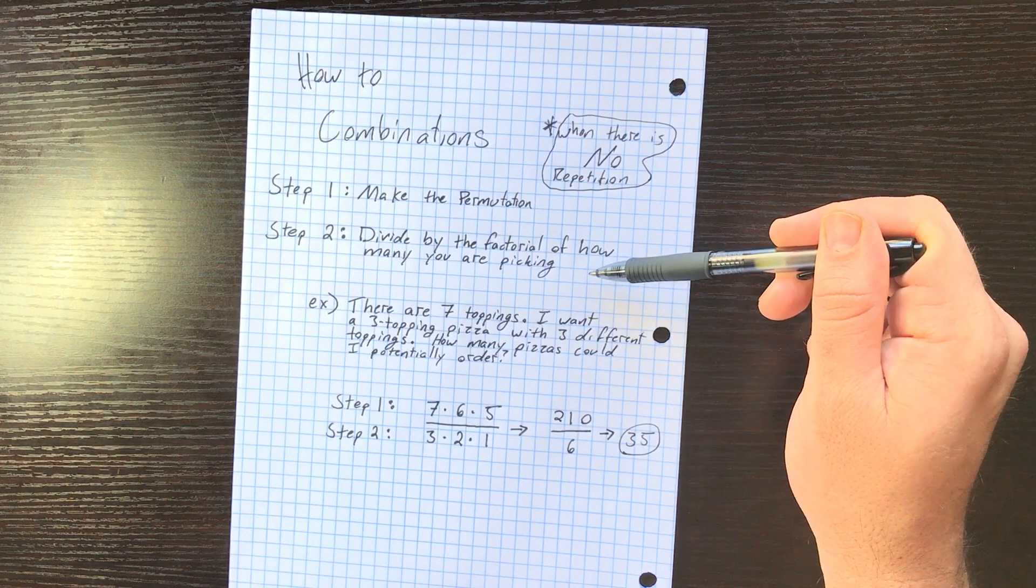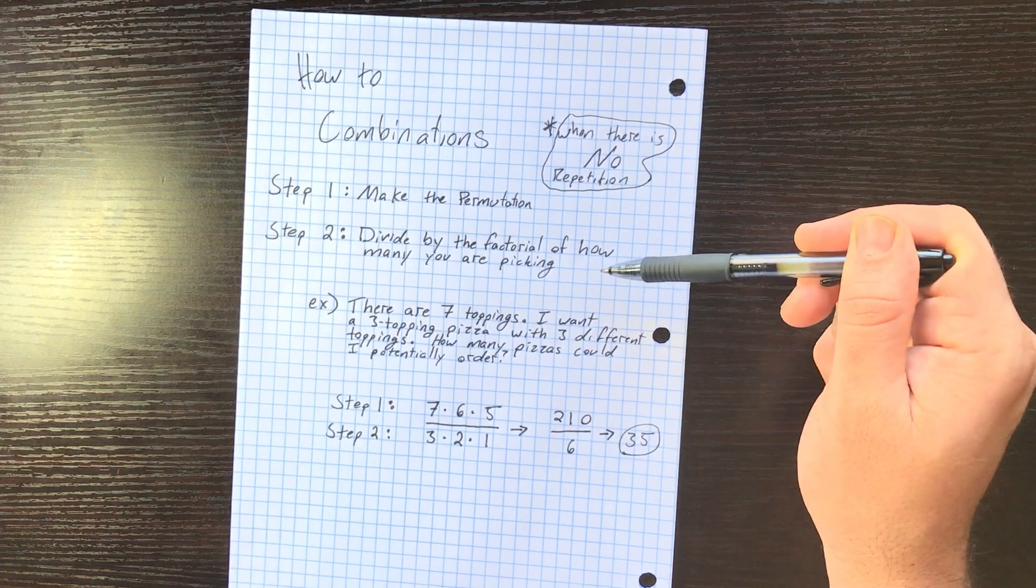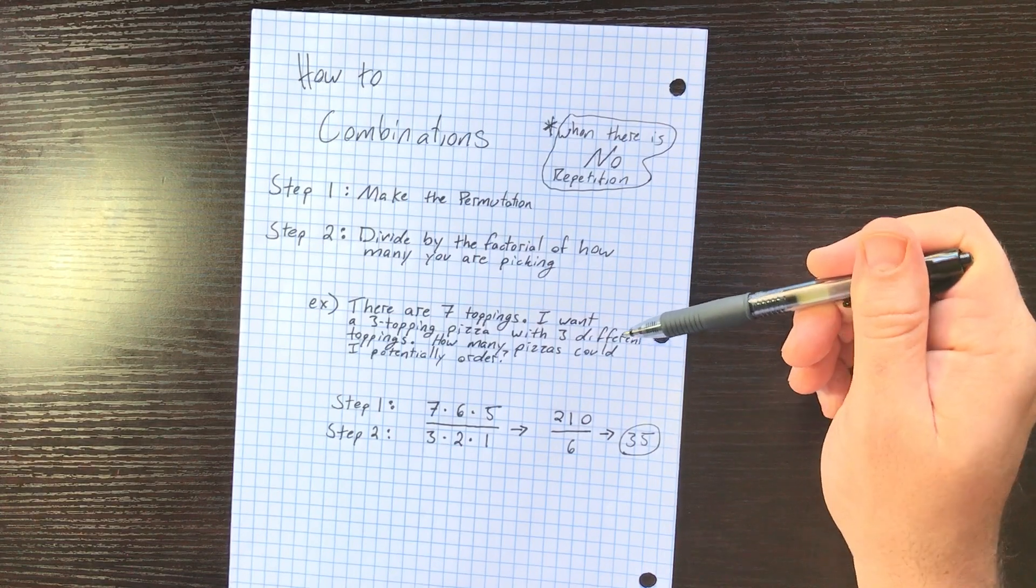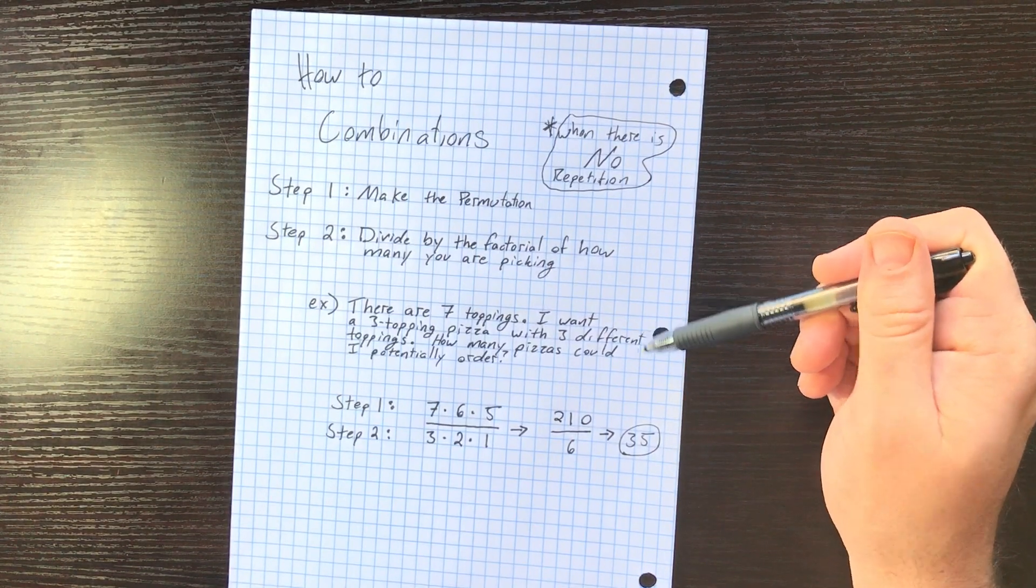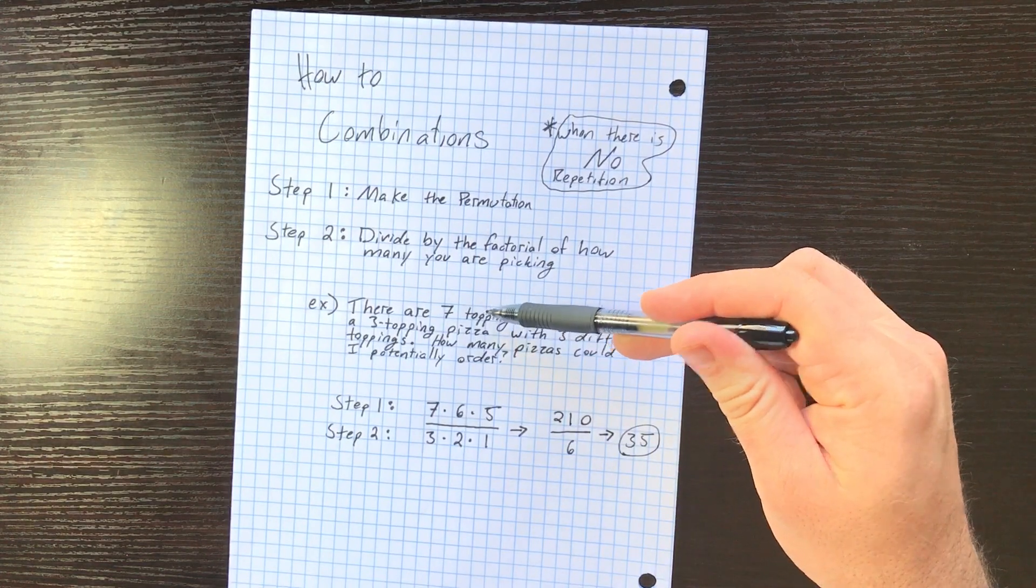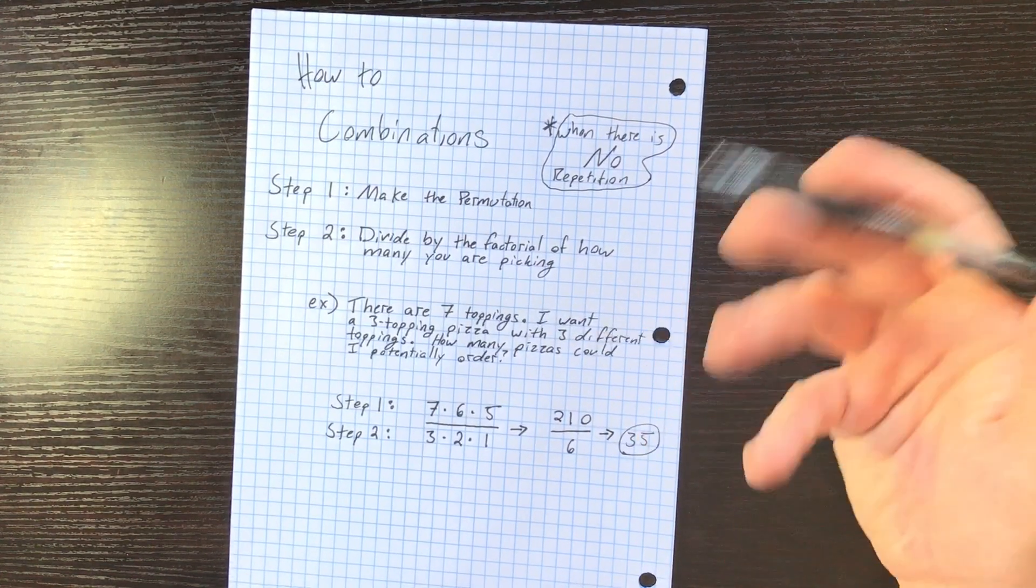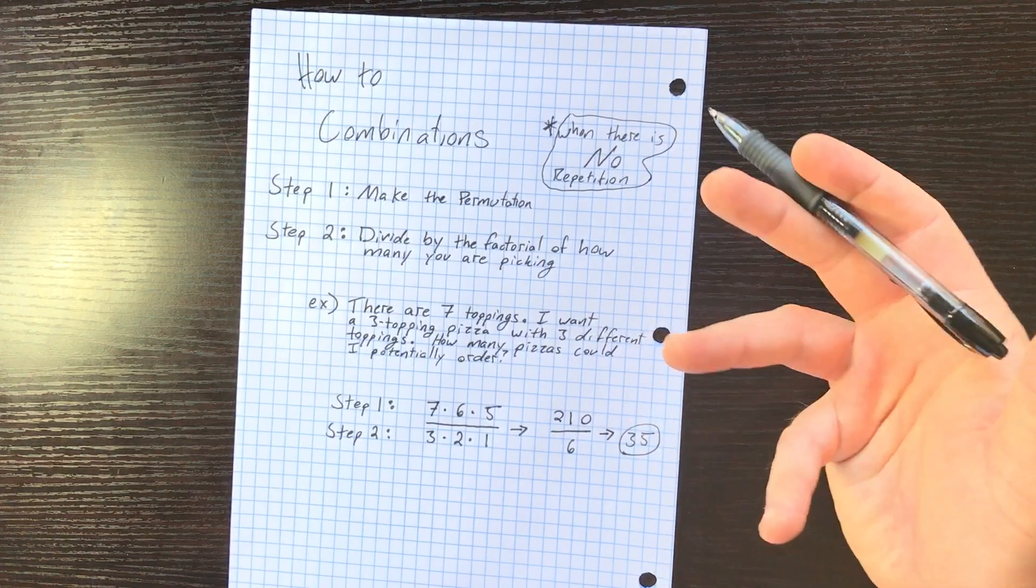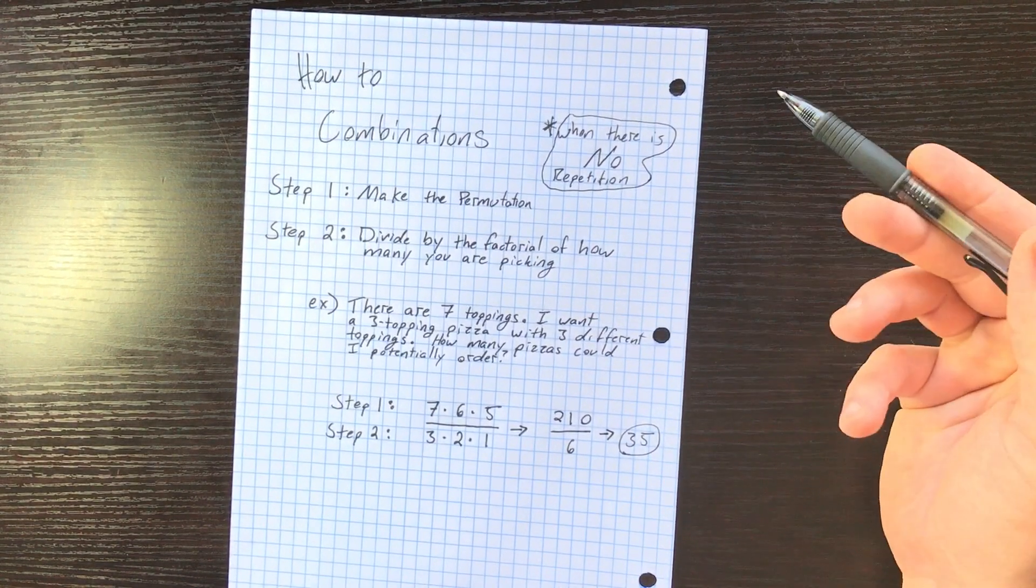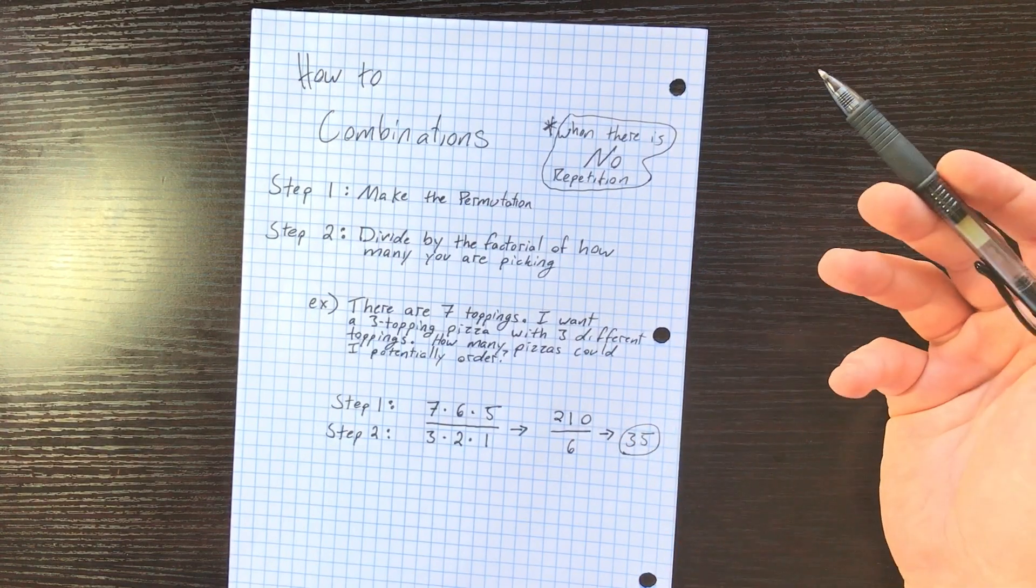There are seven toppings. I want a three topping pizza with three different toppings. How many pizzas could I potentially order? So out of those seven toppings, we want to pick three. Three different toppings - we don't want to pick pepperoni and pepperoni. We want pepperoni, sausage, and peppers, right? One, two, three.